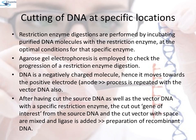Cutting of DNA at specific locations: restriction enzyme digestions are performed by incubating purified DNA with the restriction enzyme at optimal conditions. Agarose gel electrophoresis is employed to check the progression of restriction enzyme digestion. DNA is a negatively charged molecule; hence it moves towards the positive electrode, that is the anode. The same process is repeated with the vector DNA.